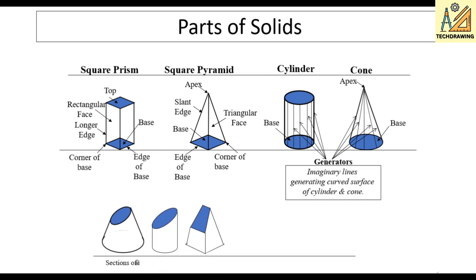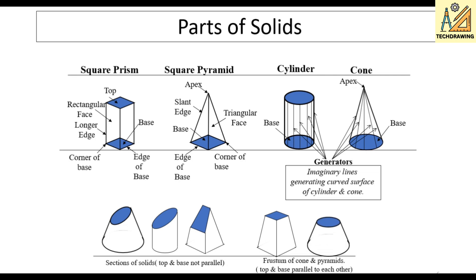There are two more categories of solids. First is sections of solids, where the top and base are not parallel. Second is frustum of a cone and pyramid, where the base and top are parallel to each other. So the basics of projections of solids should now be clear.